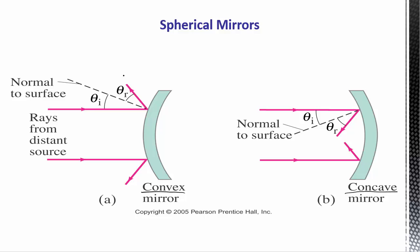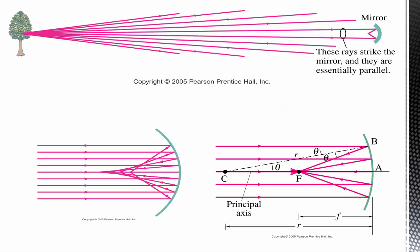For this first video, we are just going to look at concave mirrors; we will come back to convex mirrors at a later time. We want to look at how rays will bounce off of a concave mirror so that we can figure out what type of images will be formed. First, we are going to consider what happens to rays that are all parallel as they are coming into the mirror.